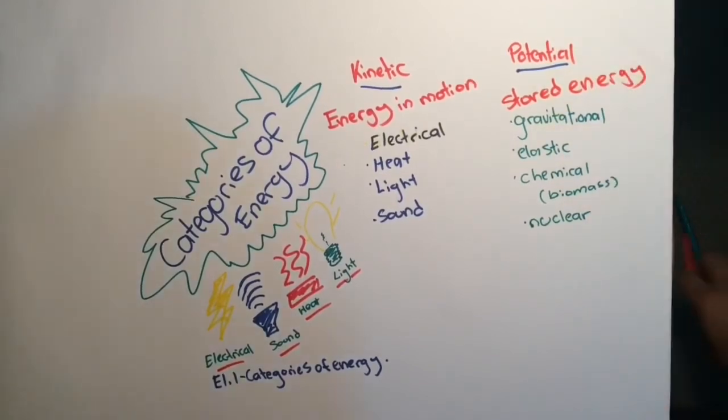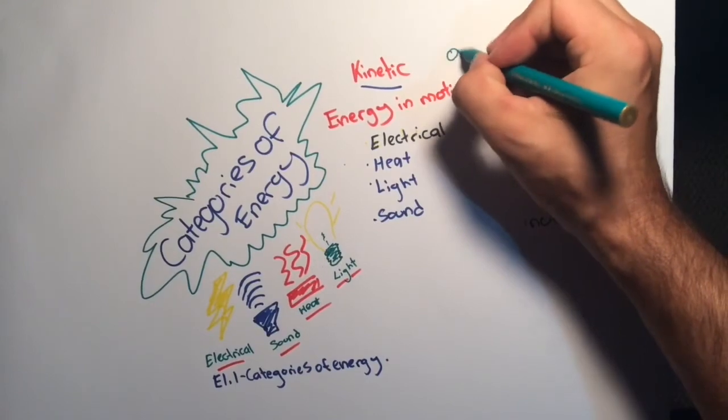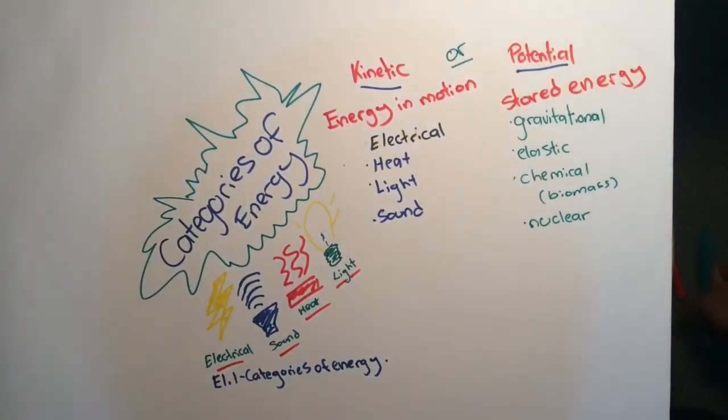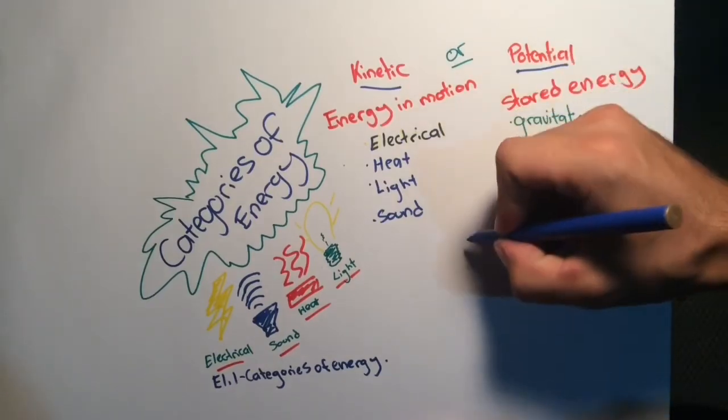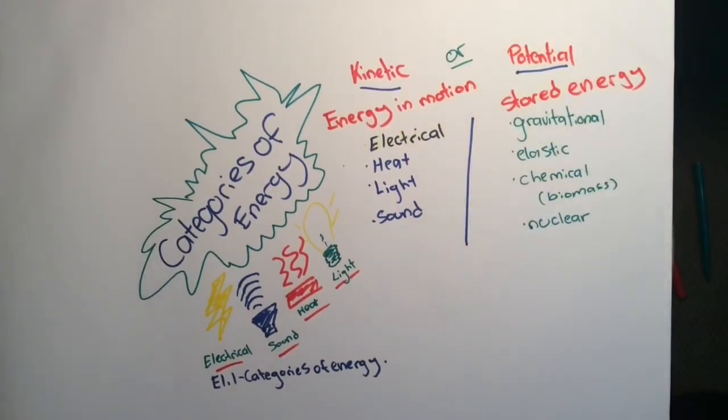The forms of kinetic energy we'll focus on include light, heat, sound, and electrical. You're probably wondering how these forms are in motion, right? Well, on a tiny scale, each of these have particles that are in motion, vibrate, orbit, or move in waves or something else.